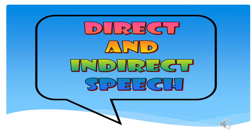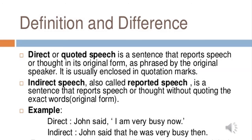Good morning all of you. Today we will learn direct and indirect speech. Direct or quoted speech is a sentence that reports speech or thought in its original form as phrased by the original speaker. It is usually enclosed in quotation marks. Indirect speech, also called reported speech, is a sentence that reports speech or thought without quoting the exact words.